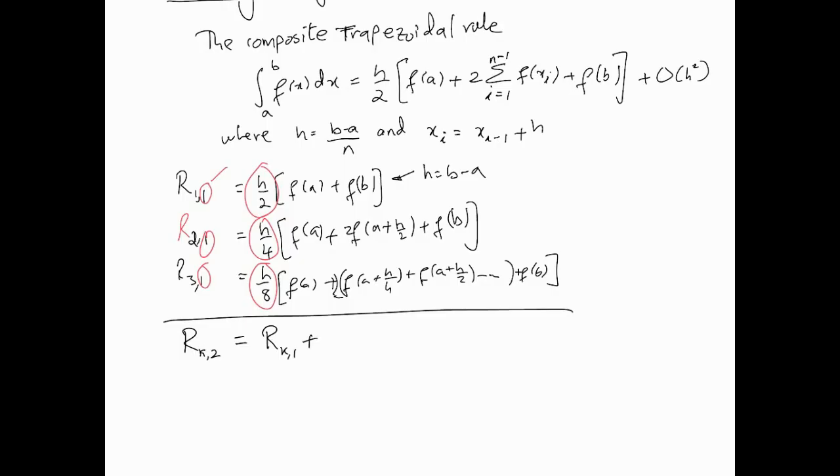So here, that means we'll use the formula is R_{K1}, R_{K1}, and one-third of R_{K1} of course minus R_{K minus 1, 1}. So that basically, with, and of course here, K starts at 2 and so on.